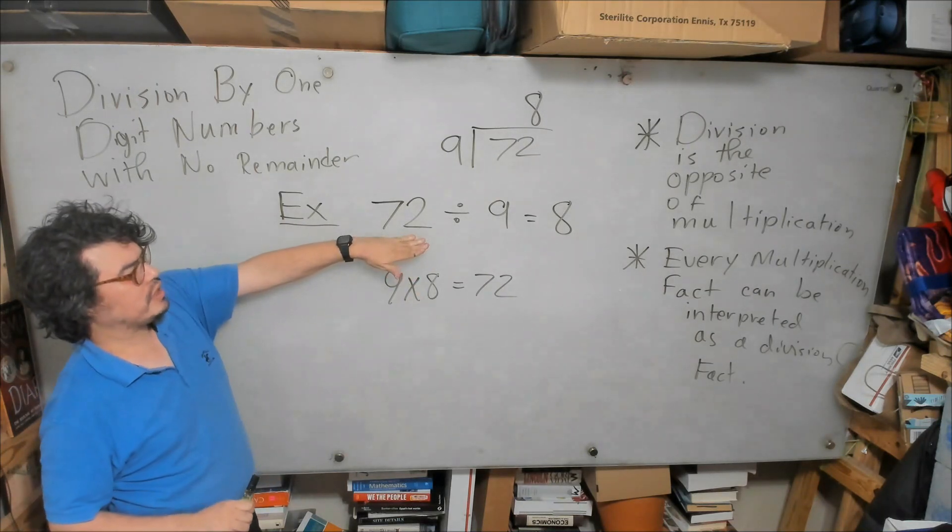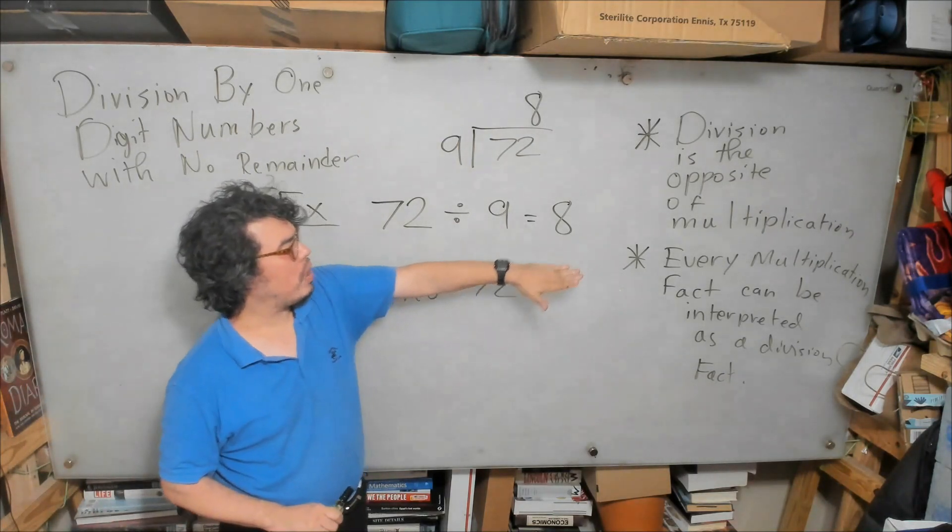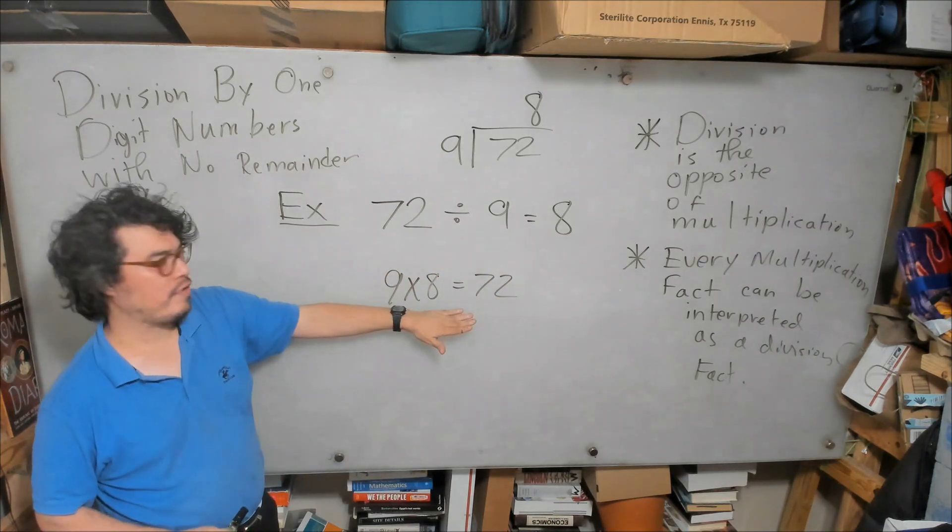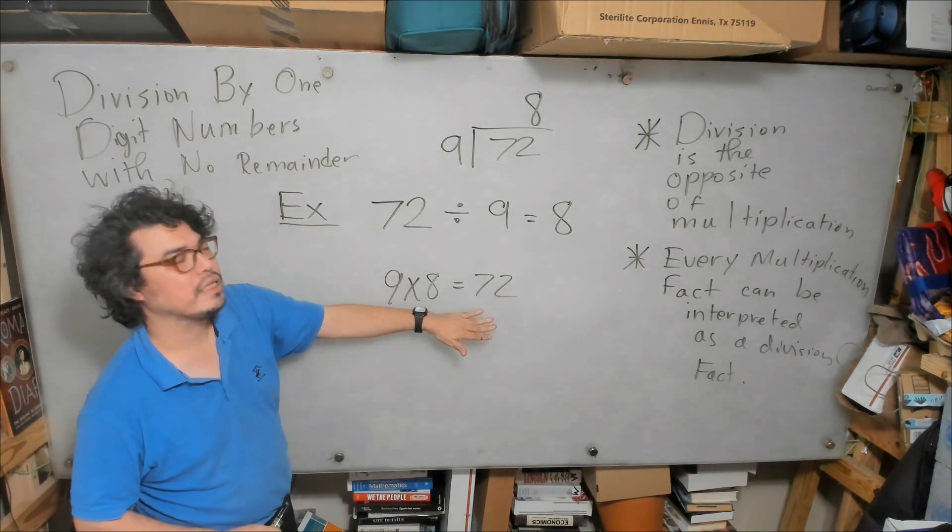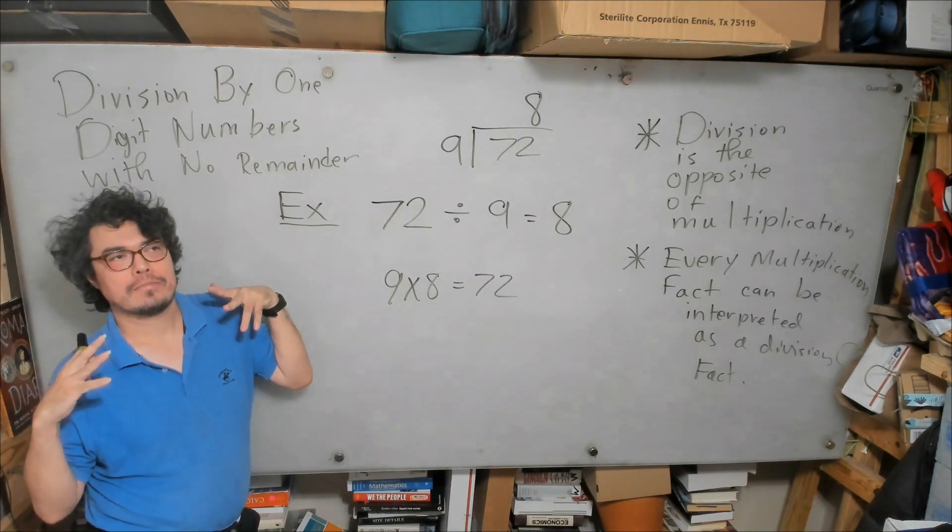Our question originally was 72 divided by 9. What is it? We found that it was 8. Why? Because we knew this multiplication fact: 9 times 8 equals 72.